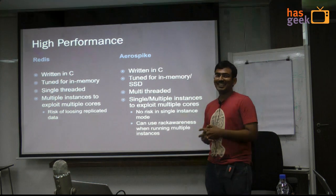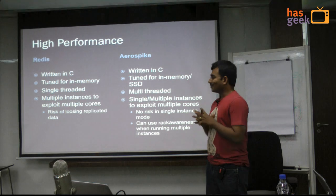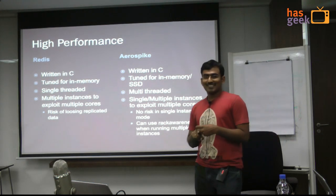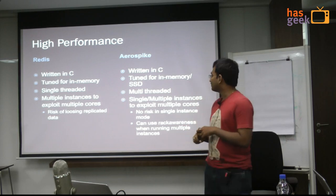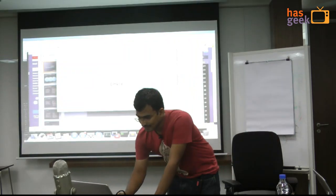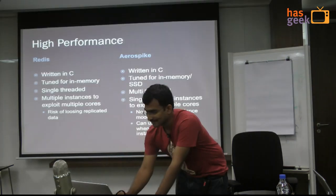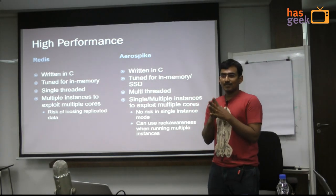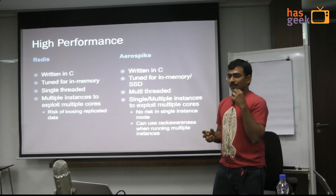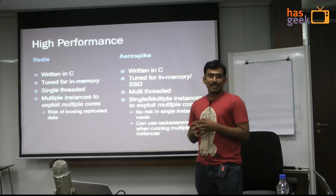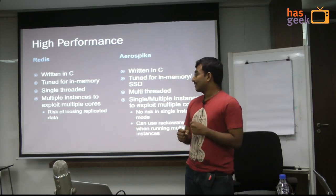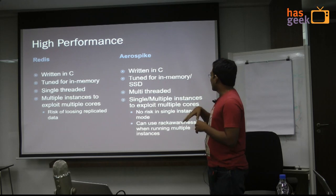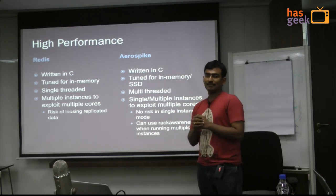A key ingredient for high performance is C. Pick any other NoSQL database — Couchbase is written in Erlang, Cassandra in Java, and VoltDB is written in C, which is why VoltDB is actually very fast. One of the core principles for high-performance databases is language choice. Both Redis and Aerospike are written in C, so we can extract a whole lot from the machine. Both are tuned for memory, and Aerospike is additionally tuned for SSD storage.